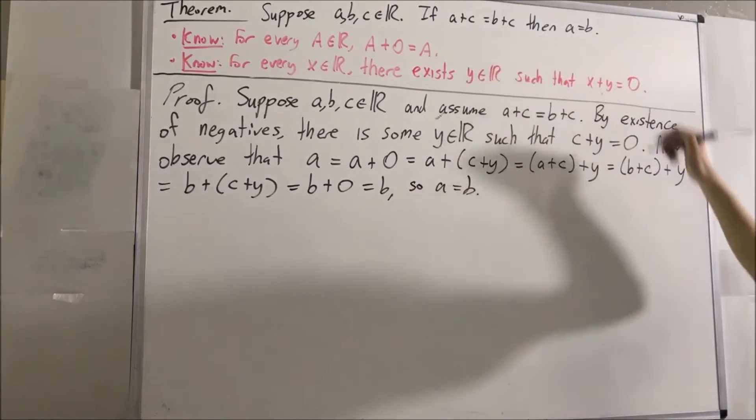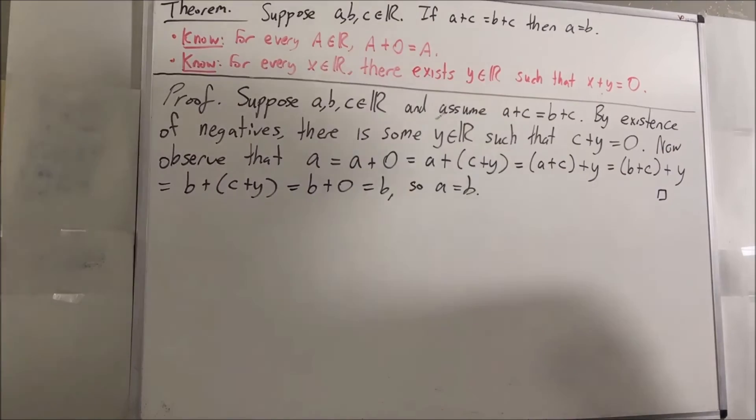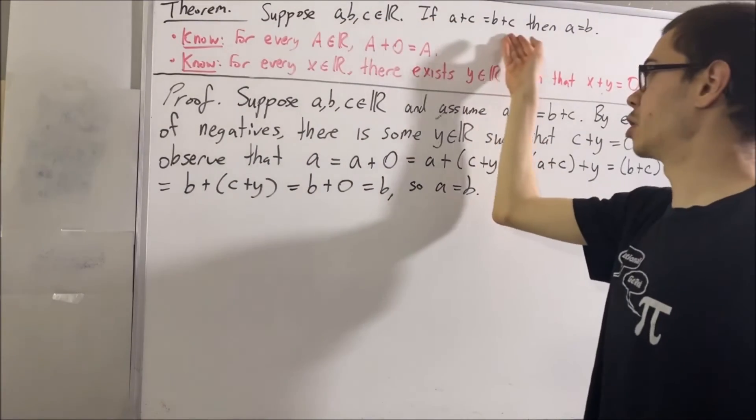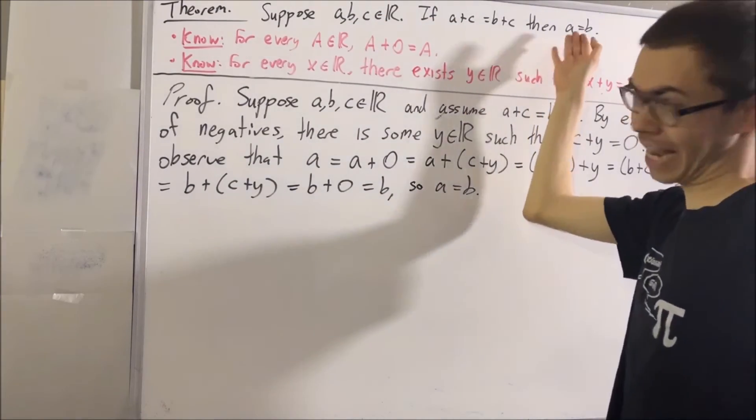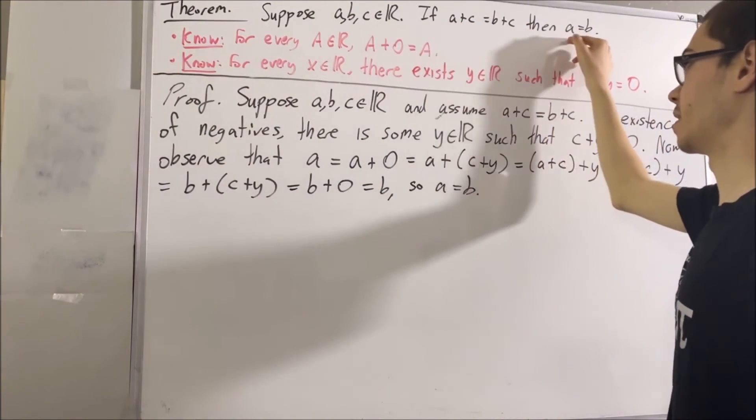And that's exactly what we wanted to prove. So this completes the proof. This property is often referred to as the cancellation law for addition. If A plus C is equal to B plus C, then A is equal to B.